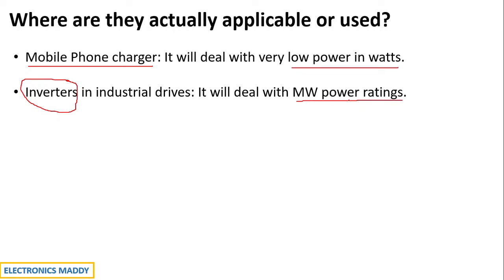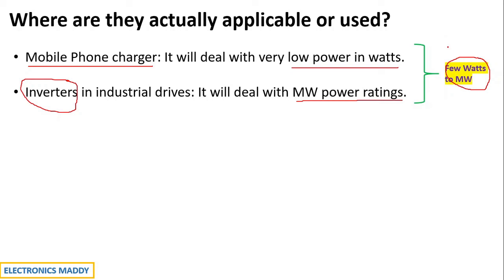So when I say megawatt power rating, the wattage in a mobile charger is very, very low — just a few watts or slightly in hundreds of watts. The conclusion is: power electronics can be applied from few watts to megawatts. Power electronics basically deals with control of power from very few watts up to megawatts, and that is why a lot of people have interest in studying this subject — you find it useful in almost all applications nowadays.